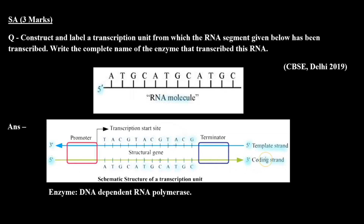So let's check the answer. This is a coding strand. The 3' end will be present at the template strand near the promoter and the 5' end will be present at the terminator. There are structural genes in between.